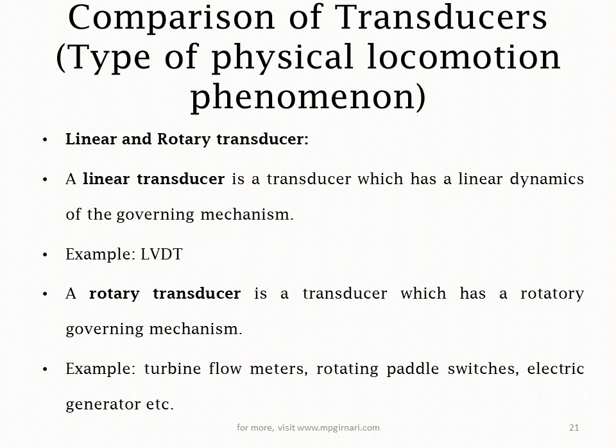Next is on the type of physical locomotion phenomenon. First is linear transducer: a linear transducer is a transducer which has linear dynamics of the governing mechanism. Remember to write such technical terms — do not write 'which moves in a single line.' Write 'which has linear dynamics of the governing mechanism.' For example, LVDT — which moves to and fro, and that piston is nothing but the core of the transformer. Next is rotary transducer: a rotary transducer is a transducer which has a rotary governing mechanism. For example: turbine flow meter, rotating pedals (electric generator), etc.